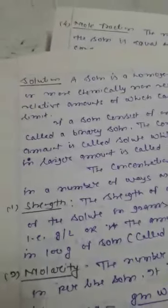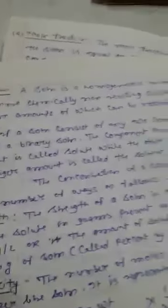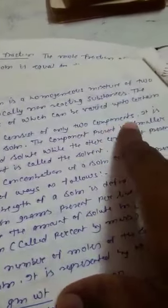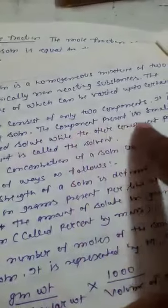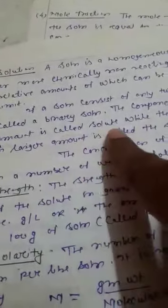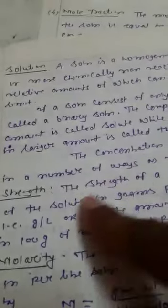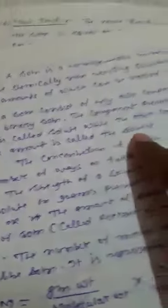First, what is solution? A solution is a homogeneous mixture of two or more chemically non-reacting substances. If solution consists only two components is called binary solution. The component present in a smaller amount is called solute while the other component present in larger amount is called solvent.